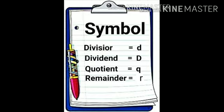Quotient is equal to small q, quotient ko hum small q se suppose karte hai. Remainder is equal to small r, or remainder. So students, these are our symbols.